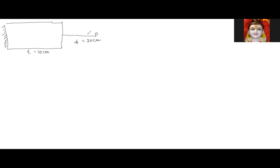The question is: where will the image appear from the silvered surface and from the unsilvered surface? We want to find d, the distance from the surface where the image is formed.